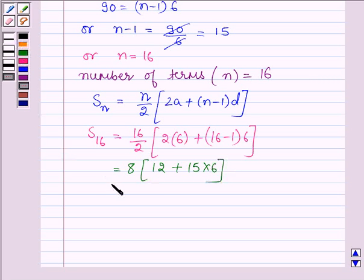And this is further equal to 8 into [12 plus 90]. This is equal to 8 into 102, which is further equal to 816.